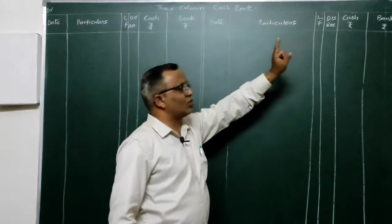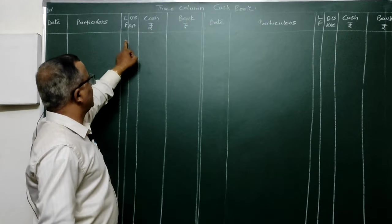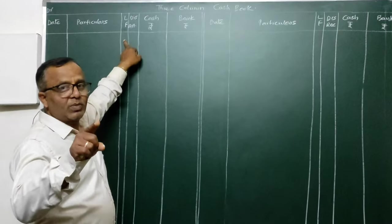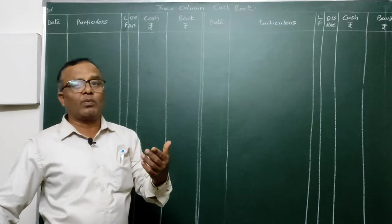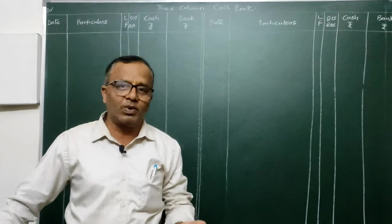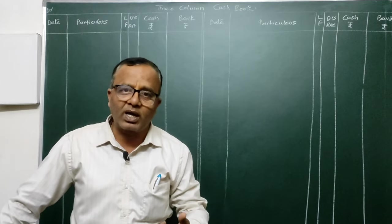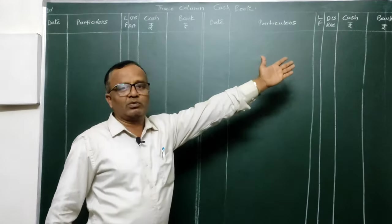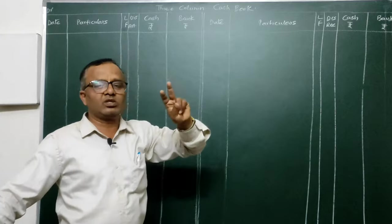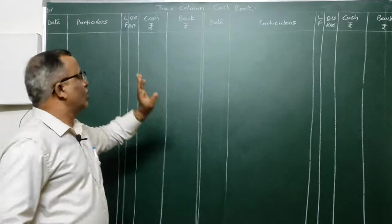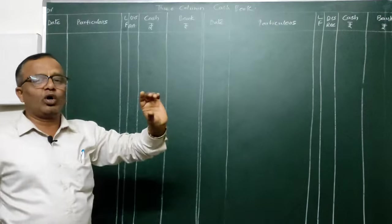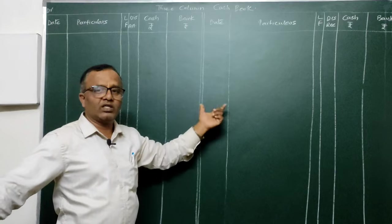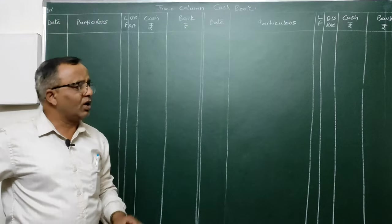Contra is represented by 'C' in the journal/LF column. Similarly, when money is drawn from the bank for office use, contra will also come because the entry is Cash Account Dr. To Bank. In cash account you debit 'To Bank', whereas in bank account you credit 'By Cash'. In these two cases, contra entries occur.